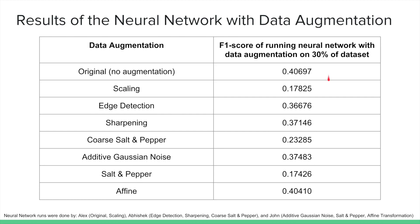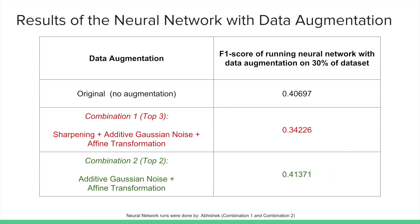As you can see, all methods performed worse than the original, but we were surprised that additive Gaussian noise and affine had the two highest F1 scores. Taking the augmenters with the top three F1 scores, we ran the neural network on a combination of them. This performed much worse than expected. Trying only the top two augmenters, we were able to see a slight improvement in the F1 score.